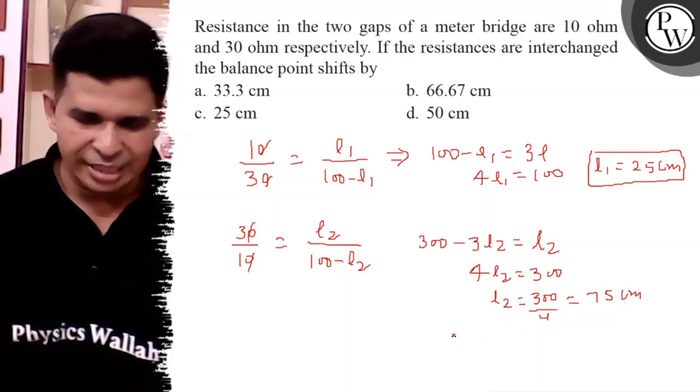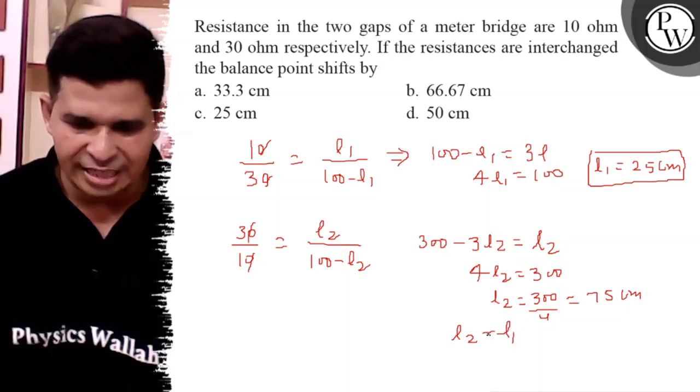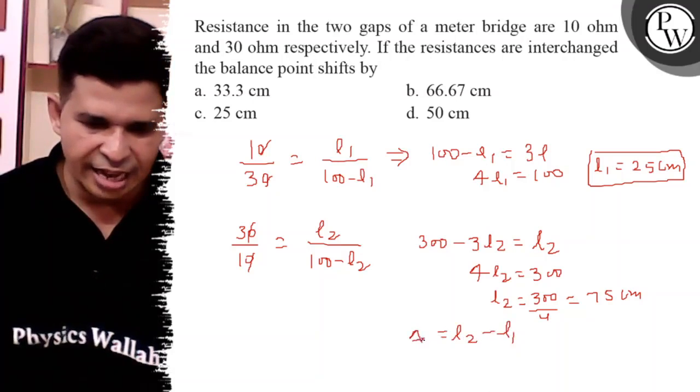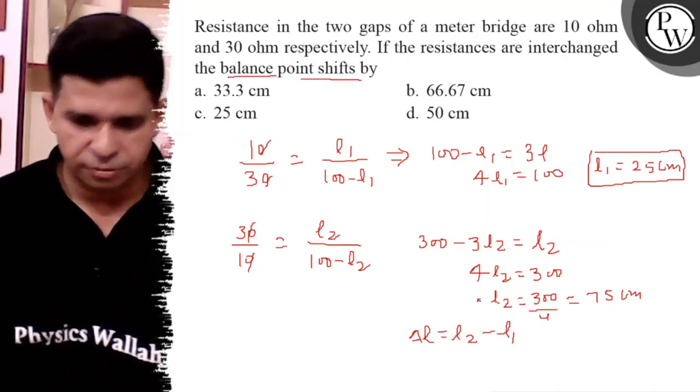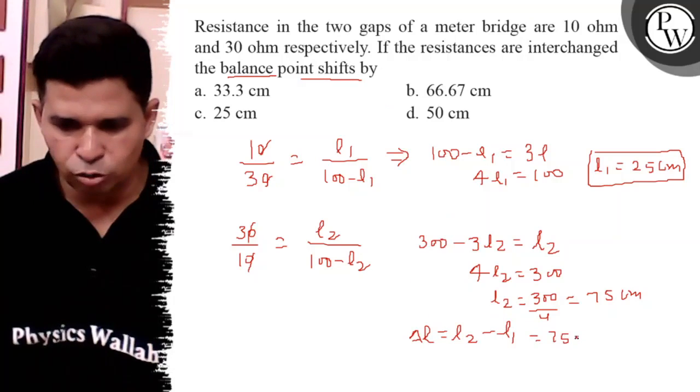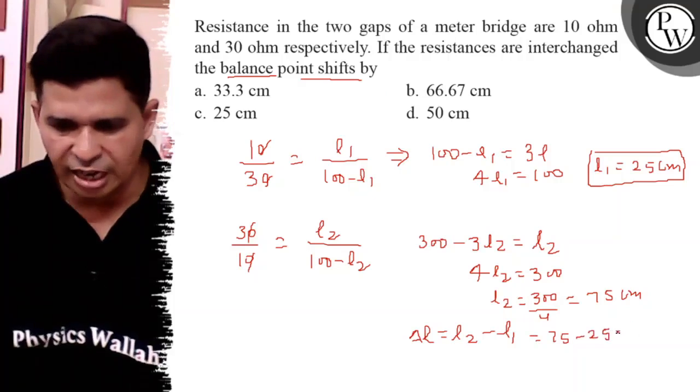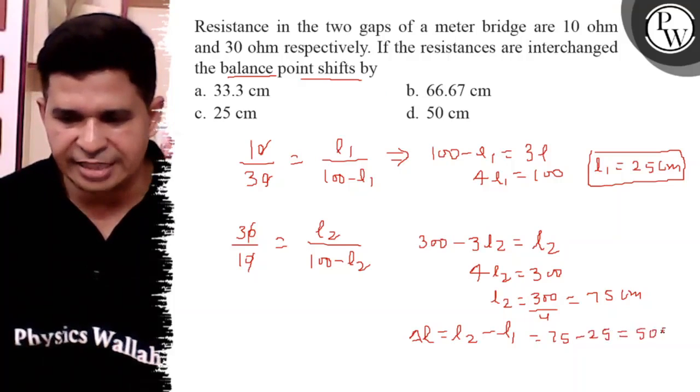Now what is the answer is L2 minus L1, which is delta L, because here the question asks about the balance point shift. So 75 minus 25, the final answer is 50 centimeter.